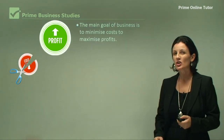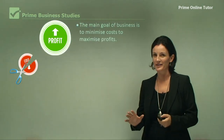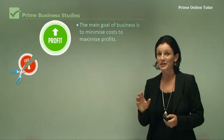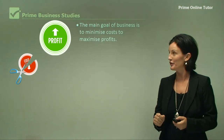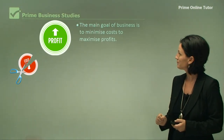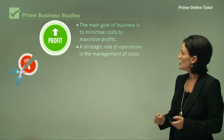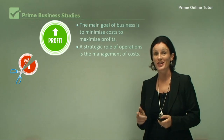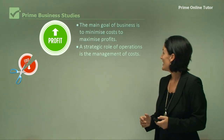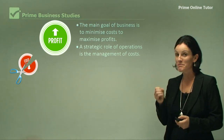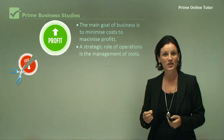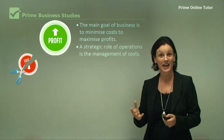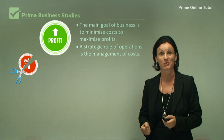The main goal of all businesses is to maximise profits. So therefore the strategic role of an operations manager is to manage the costs so that the business can maximise the profits.